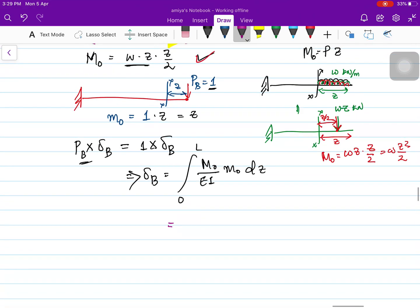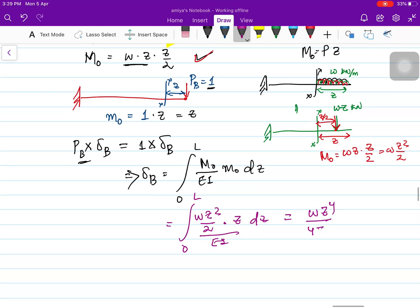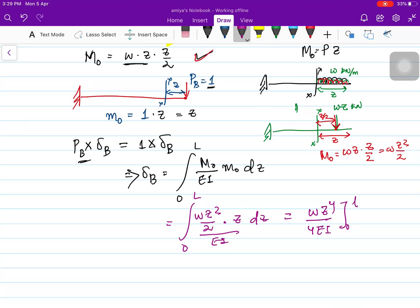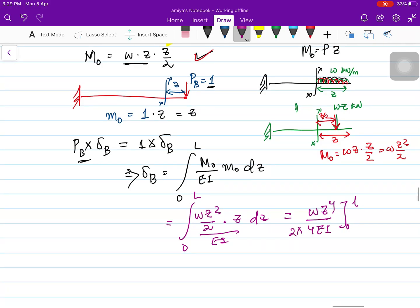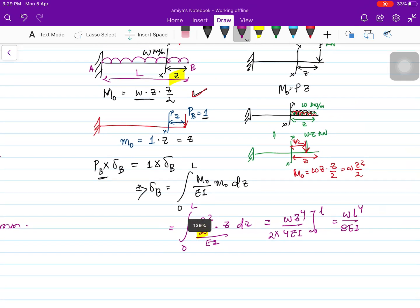So capital M_0 is W Z squared by 2 into Z dZ from 0 to L. This gives the value of W Z to the 4 by 4, divided by EI, 4 EI, 0 to L. So 2 to the 4 to the 8, this 2 is there, which gives W L to the 4 by 8 EI. This is the deflection of the free end B when the cantilever is subjected to uniformly distributed load.